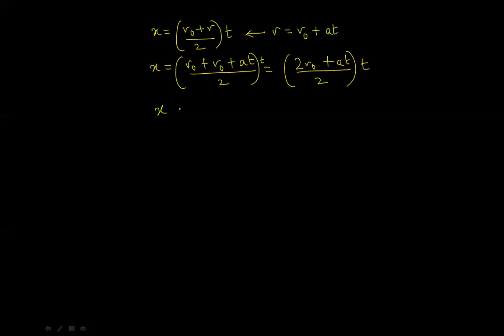And, if you solve this, this is equal to, basically, X is equal to V0T plus 1 half AT squared. And, this is our third of four primary equations.